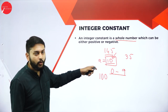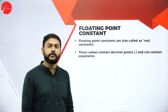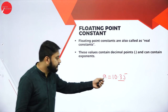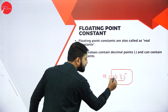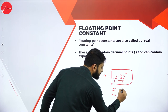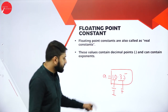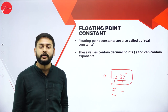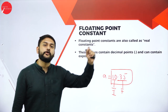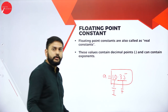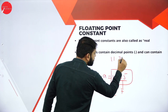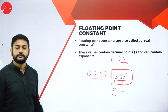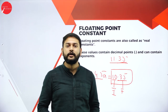The next type is the floating point constant. For example, 'a = 10.35'. This number has two parts: an integer part (10) and a floating part (.35). Any number with a decimal point is called a floating point number. For example, 11.35 and 12.45 are floating point constants.